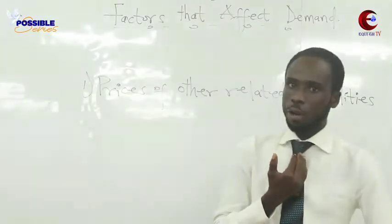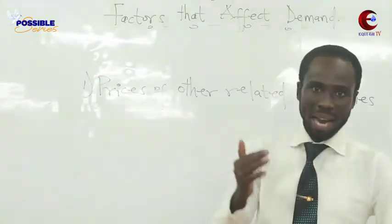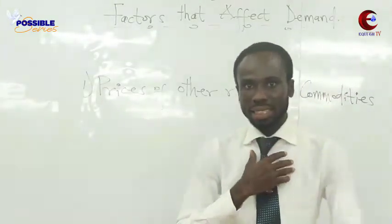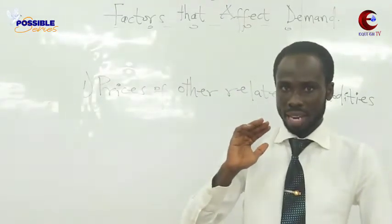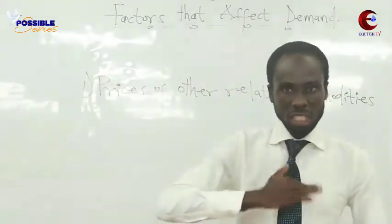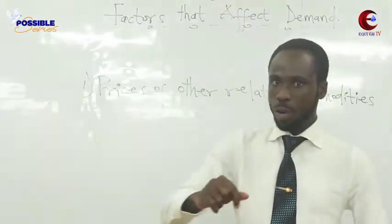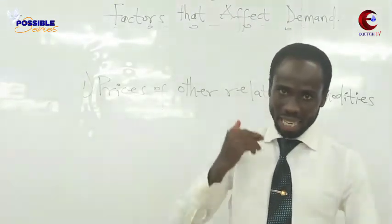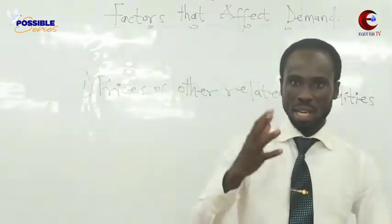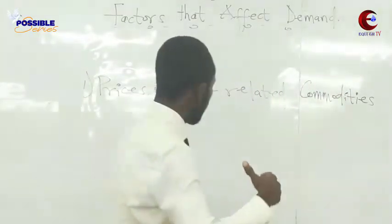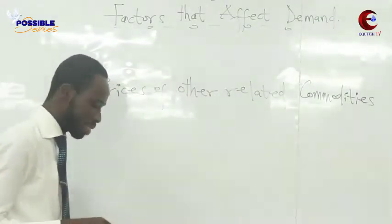We are saying that when the price of another commodity changes, it's either the quantity demanded of our commodity comes down or it goes up. We are going to the board and we will deduce the technical aspects into some figures or letters.